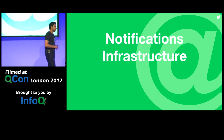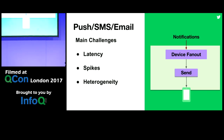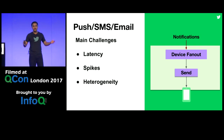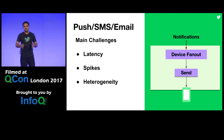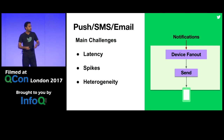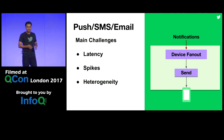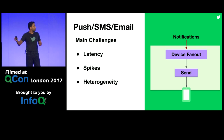Let's talk about how our infrastructure addresses these challenges. This is our push architecture, used to send push, SMS, and email notifications. At a high level, we receive notifications, apply business logic — honoring user settings, checking for spam and abuse — and once a notification passes those rules, it's sent out for delivery and eventually reaches your devices. The three main challenges for this architecture are: keeping latency low since push is a live channel, dealing with unpredictable spikes, and managing heterogeneity.